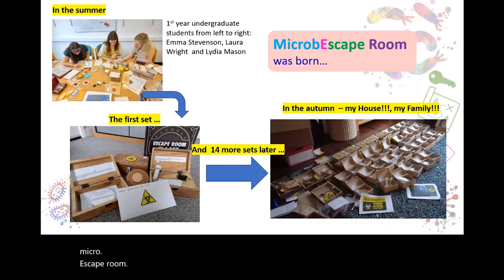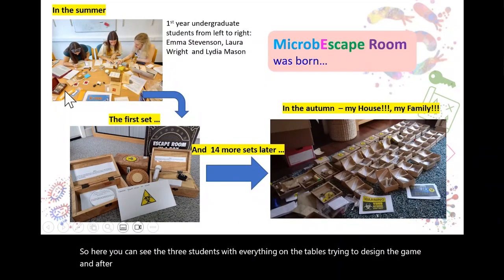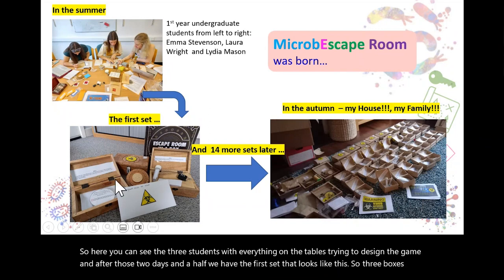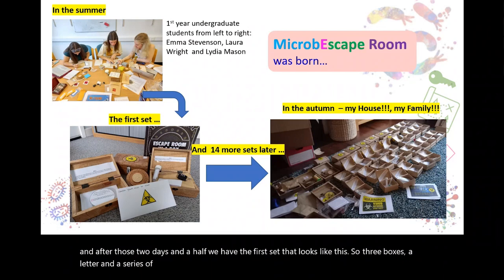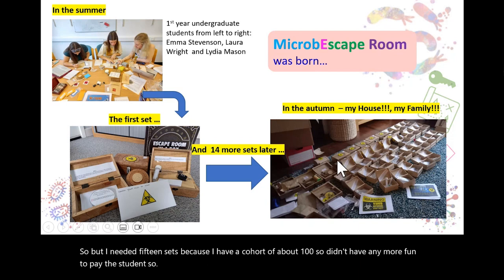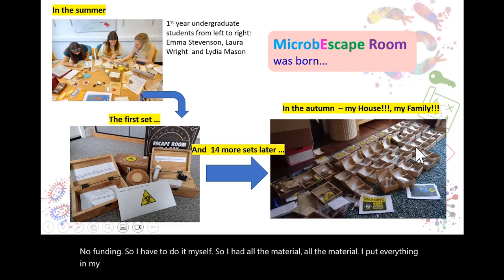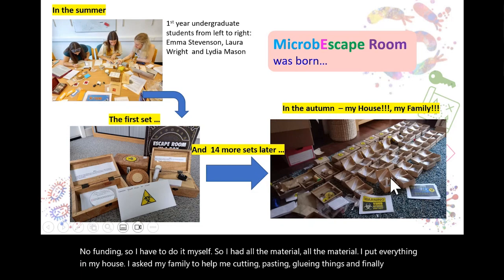Here you can see the three students with everything on the tables trying to design the game. After those two days and a half, we had the first set, which looks like three boxes, a letter, and a series of elements. But I needed 15 sets because I have a cohort of about 100. I didn't have any more funding to pay the students, so I had to do it myself. I put all the material in my house and asked my family to help me cutting, pasting, and gluing things. Finally I got the 15 sets that we needed.